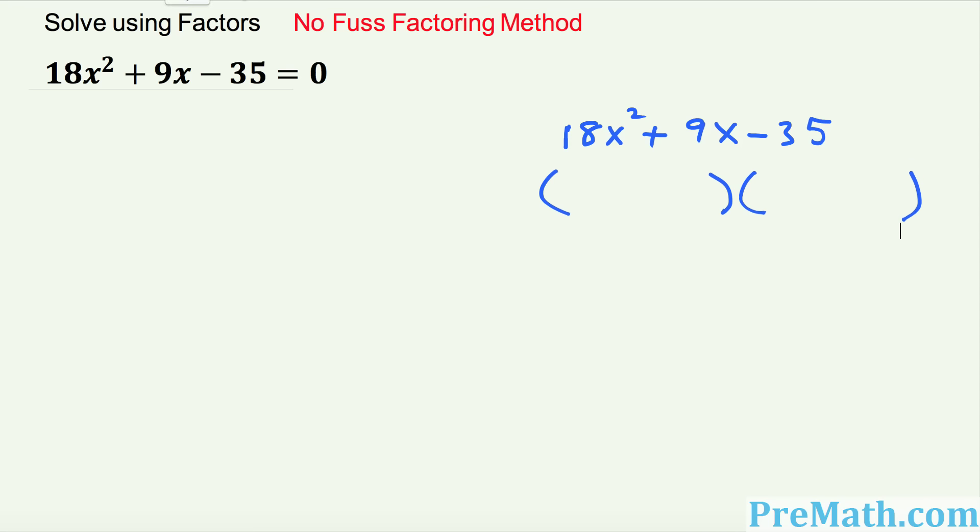Next step I want you to just put down this part only: 18x. Do not write this exponent. Just simply disregard this exponent. So we will just put down 18x right up here and 18x right up here.